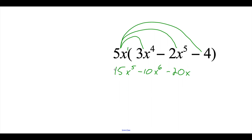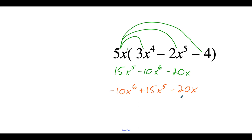Now one thing I notice about this: when we're writing out our polynomials, we always want to write them out in power descending order, going from highest power to lowest power. I notice in the middle here we've got this x to the 6th, but in the front we have that x to the 5th, so it's not quite in power descending order right now. So I'm going to rearrange things. I'm going to take this negative 10x to the 6th and pull that to the front because it's got the highest power. This 15x to the 5th is the next highest power, so plus 15x to the 5th. And then our lowest power is this negative 20x. So this is going to be our final answer, putting that polynomial in power descending order.